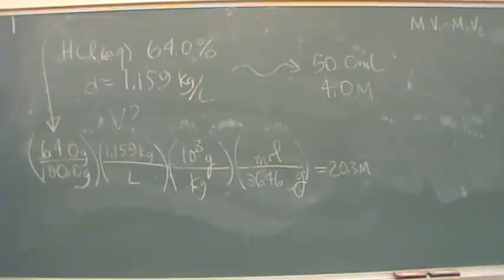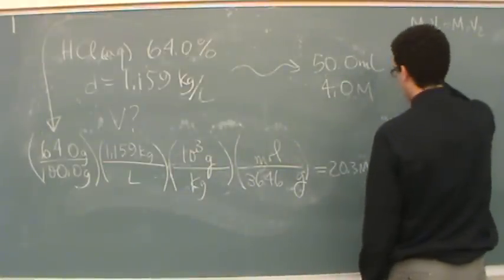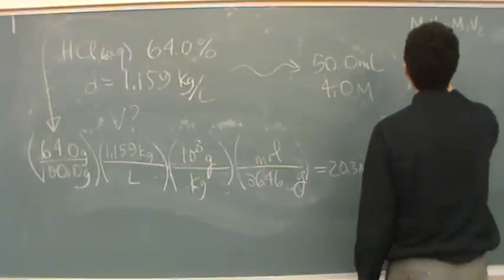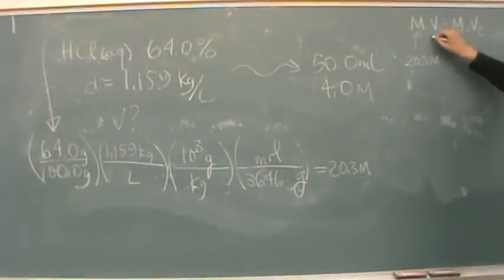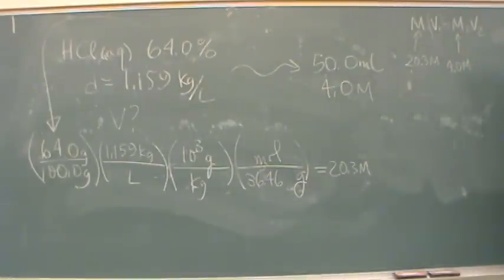So now we'll use our dilution formula. We're starting off with 20.3 molar. The initial volume, this is what I want to know. So I don't know our initial volume. The final volume, or the final molarity, is 4.0 molar. That was given in the question.